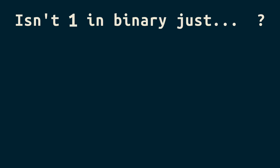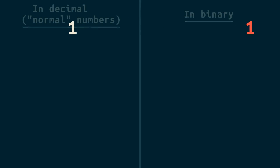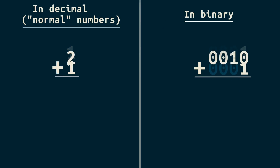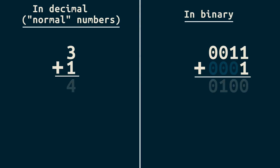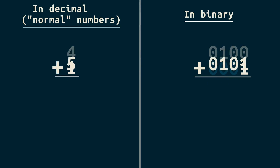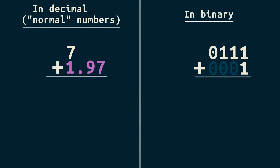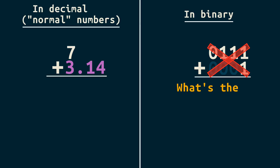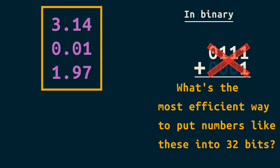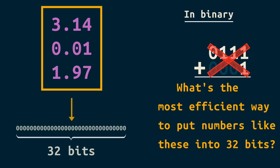You probably expected a one in binary to look like a one. Let's start adding to it, counting up by one. For integers, this is exactly how it works inside the computer. But what if I want to add this much, or this much, or this much? The simple representation here won't work. So what's the most efficient way to put numbers like these into 32 bits?